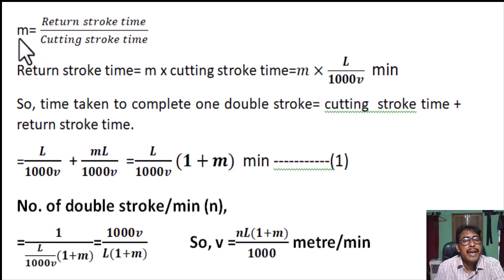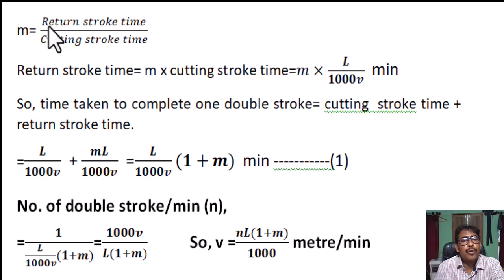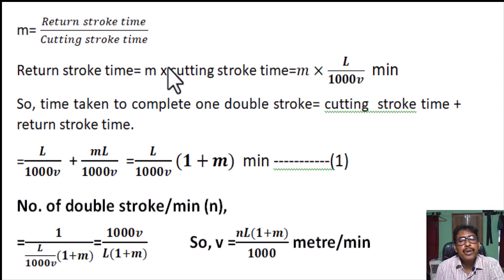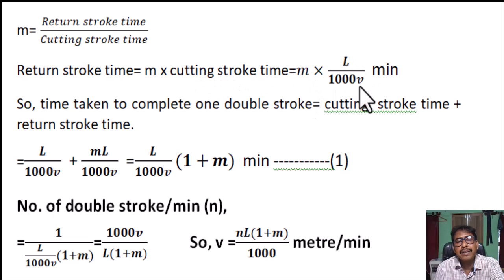Again, M equals return stroke time divided by cutting stroke time. So, return stroke time equals M into cutting stroke time. We already calculated cutting stroke time, so return stroke time equals M into L divided by 1,000 into V minutes.